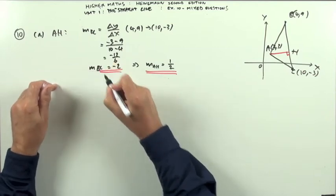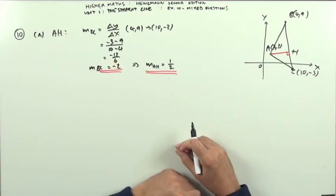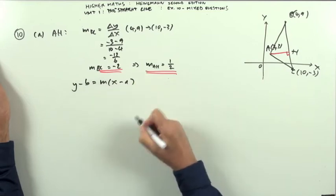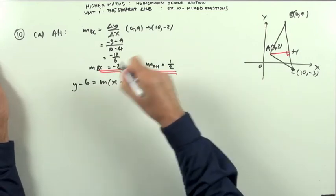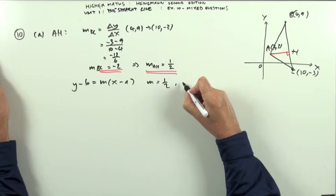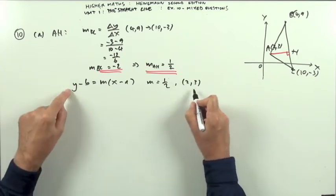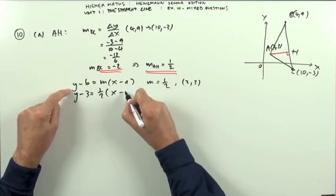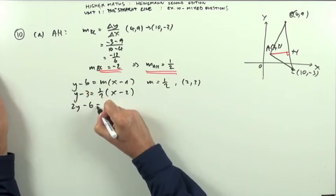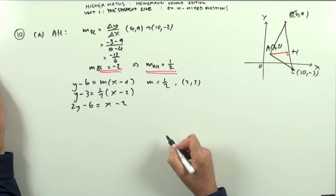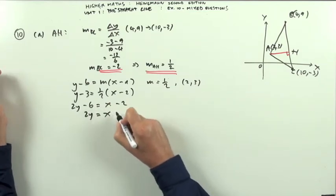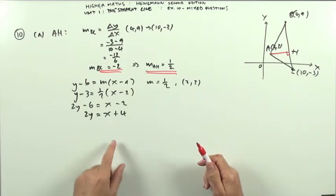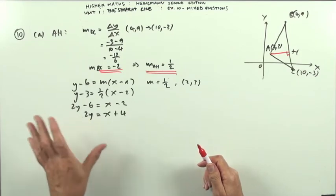For the equation of line AH, using y − b = m(x − a): the gradient is 1/2 and the point on AH is A(2,3). So y − 3 = 1/2 × (x − 2). Multiply through: 2y − 6 = x − 2, which gives 2y = x + 4. That keeps everything as integers while staying close to y = mx + c form.